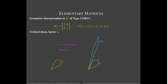For the other type 3 ERO, replacing the second row with the second row plus k times the first row, we move the y-coordinate by an amount proportional to the x-coordinate and the shear factor. With a shear factor of 2.5, a point one unit from the y-axis moves up 2.5 units, and points with x-coordinate of two move up five units.